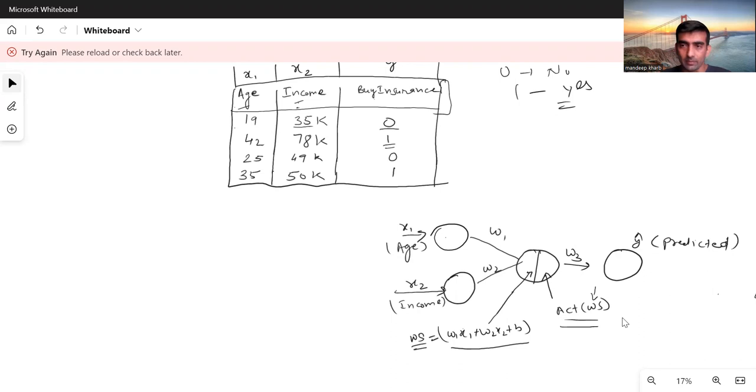Activation functions are mathematical functions that do certain calculations and give you output. Here in such cases where we have zero-one, true-false type of problem, we use the sigmoid activation function.